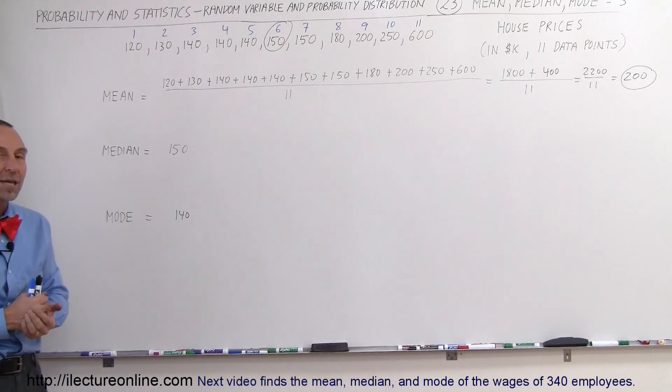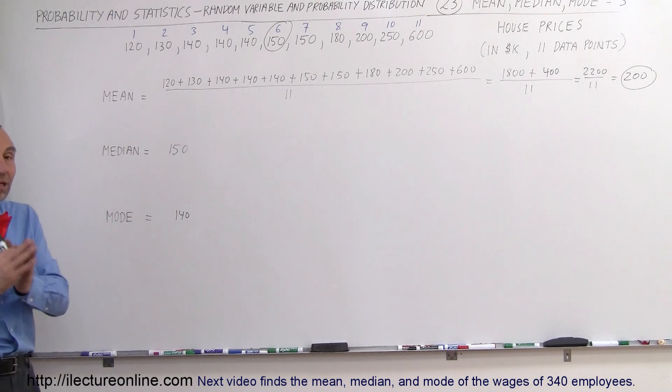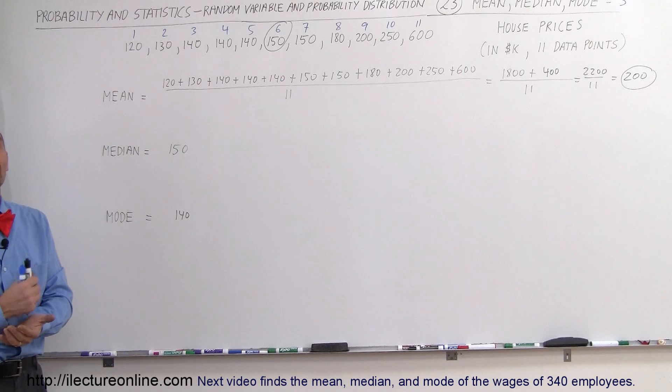And that's what we mean by the mean, which is the average, the median, which is the middle price, and the mode, which is the most occurring price. And that's how we do that.